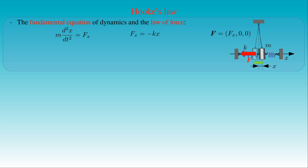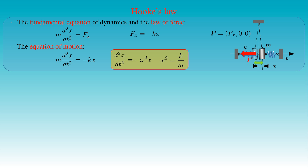The mass m of the cylinder times the second-order derivative of its displacement x with respect to time t is equal to the x component of the force F. Here the law of force is given by Hooke's law — that is, the x component of the restoring force F acting on the cylinder is equal to minus the spring constant k times the displacement x of the body. The spring constant k represents the total effect of both springs attached to the cylinder. Then the equation of motion states that m times the second-order derivative of x with respect to t is equal to minus k times x. Introducing the variable ω² defined as the ratio of k to m, we can write the equation of motion as the second-order derivative of x equal to minus ω² times x.